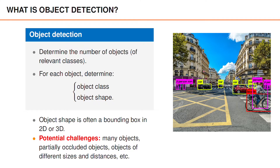Object detection is challenging for many reasons. To name a few: we may have partially occluded objects, which means that we only see some part of the object. We could also have objects that are far away and therefore look small to the sensor.